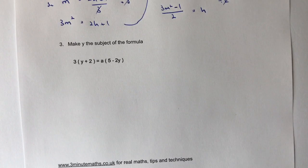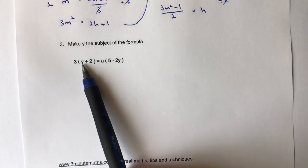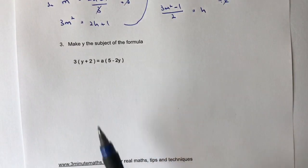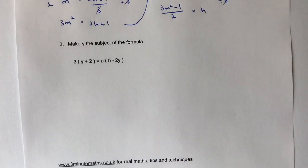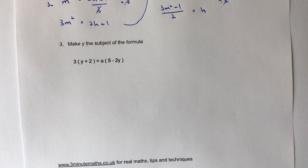Now the problem I've got with this one is I've got a Y here and I've got two Y here, so I need to find a way to get my Y's on one side of the equal sign and pretty much everything else on the other side.